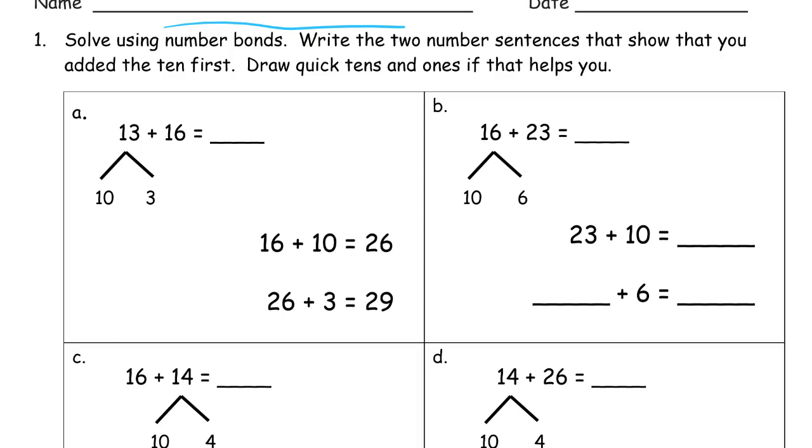You can see the first one, a, is all done. Just write that 29 right there. Hopefully this will be a hint about how to do it. We started with the 16, we split up the 10 and the 3, decompose that.